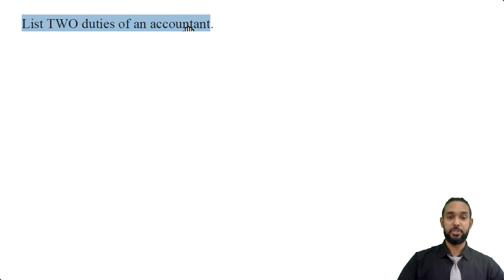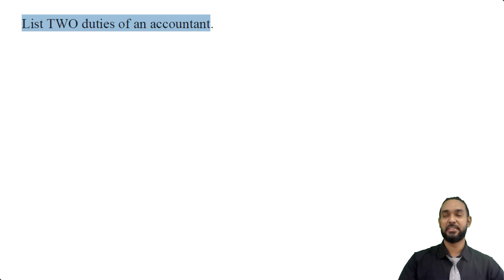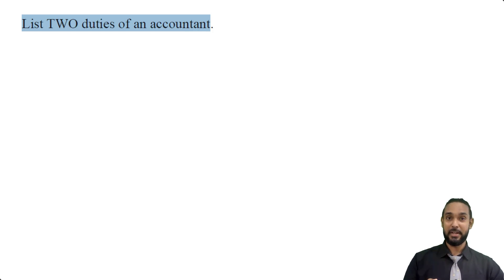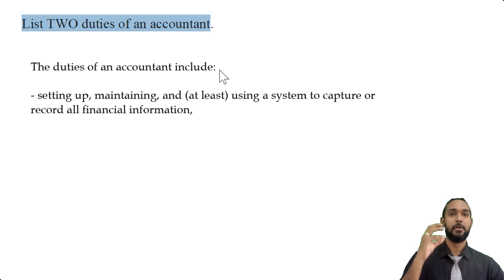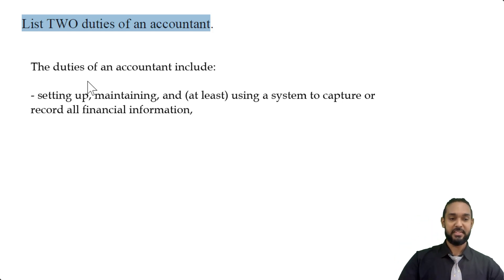It says to list two duties of an accountant. This is kind of subject to interpretation because different texts will give you different lists. You can Google this and you'll get different answers from different websites. But this is what I have. The duties of an accountant include — and I give you more than two because I want you to have more than just two at your disposal. The first one is setting up, maintaining, and at least using a system to capture or record all financial information.